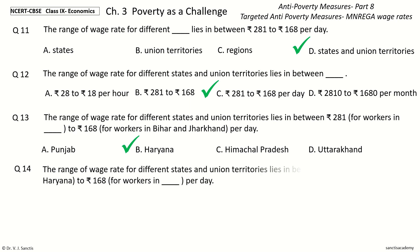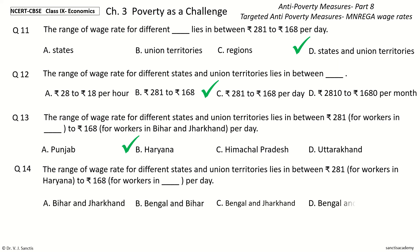Last question: The range of wage rate for different states and union territories lies in between Rs. 281 for workers in Haryana to Rs. 168 for workers in Dash per day. The options are: Bihar and Jharkhand, Bengal and Bihar, Bengal and Jharkhand, Bengal and Chhattisgarh. The answer is Bihar and Jharkhand.